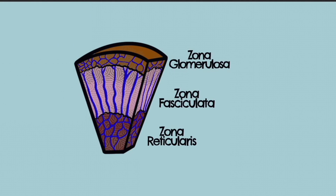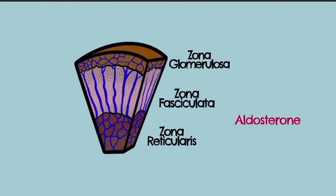I remember this with the acronym GFR, but don't confuse this with glomerulofiltration rate. The zona glomerulosa is the main site for production of mineralocorticoids, mainly aldosterone, which acts to maintain blood pressure. Aldosterone acts on the mineralocorticoid receptor found on the distal tubule and collecting duct of the nephron to resorb sodium and excrete potassium. This increases the resorption of water and increases blood volume.